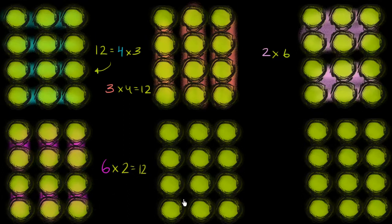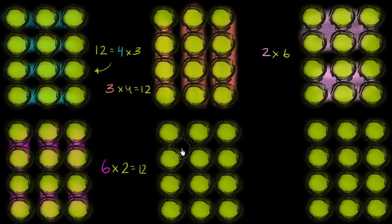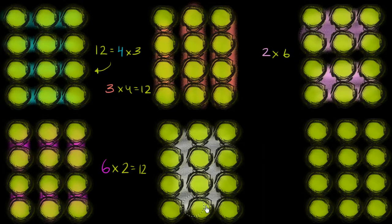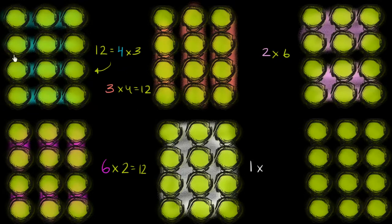But we don't have to stop there. We could also literally view 12 as 1 group of 12. So how would that look? So this whole thing is just 1 group of 12 here. So we could literally say 1 times 12, 1 times 12 is equal to 12.